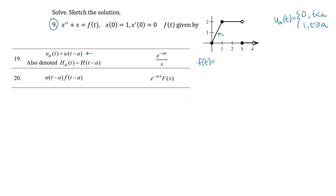Going back to basic algebra, y = mx + b: the slope is 2, the y-intercept is 0, so this would be y = 2t. I'm not going to worry about the fact that this function is not defined for t less than 0, because when we do Laplace transforms we're just looking at the domain for t greater than or equal to 0. So I'm going to start with f(t) = 2t.